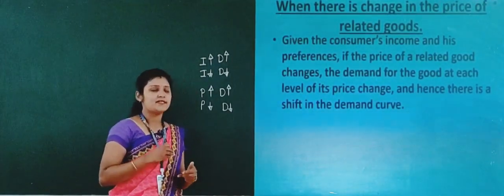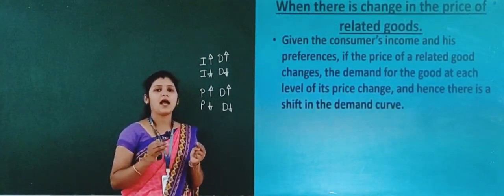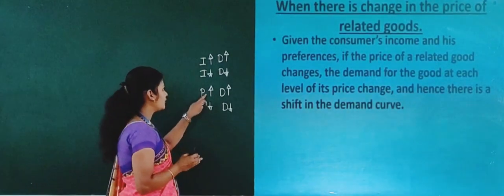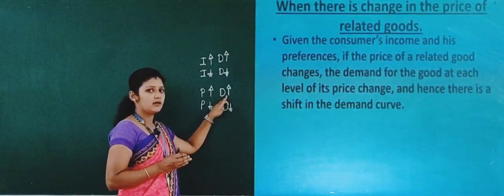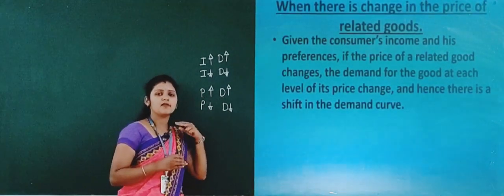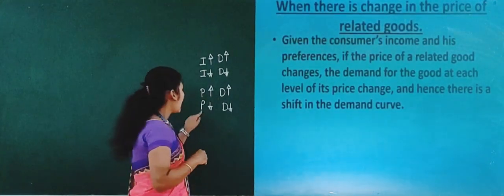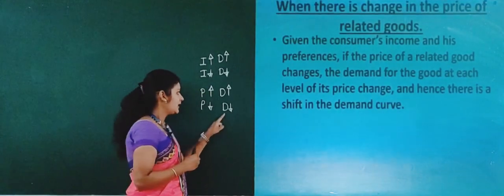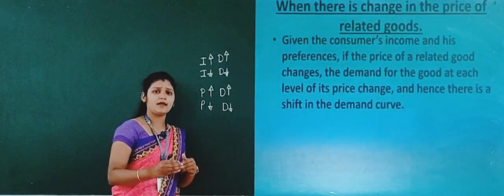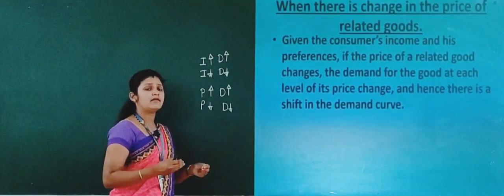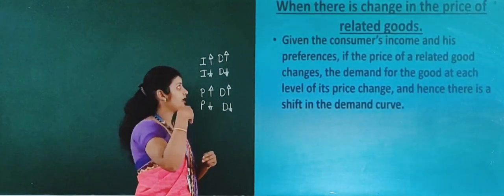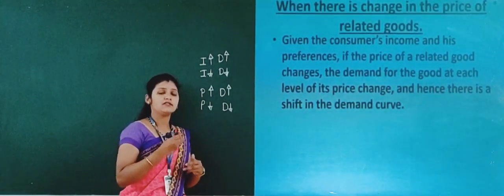When the price of coffee increases, consumers will shift to tea and demand more tea — so demand for tea increases. When the price of coffee decreases, consumers will shift back to coffee, and automatically the demand for tea decreases. This is how a change in the price of a related good leads to a change in demand and hence a shift in the demand curve.